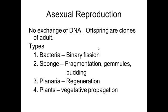Gemules are a little different — they only occur in freshwater sponges like those here in Michigan. They form because sponges cannot survive freezing in winter. In the fall, the adult sponge takes amoebocytes from inside its body, which cluster together into a small dehydrated ball called a gemule. In the springtime, that gemule rehydrates and becomes an adult sponge — it's a form of surviving the winter.